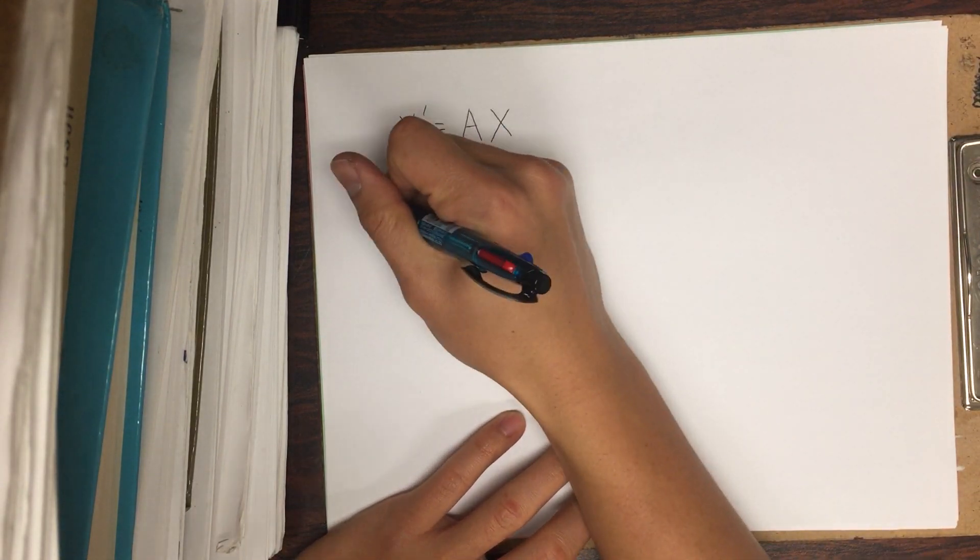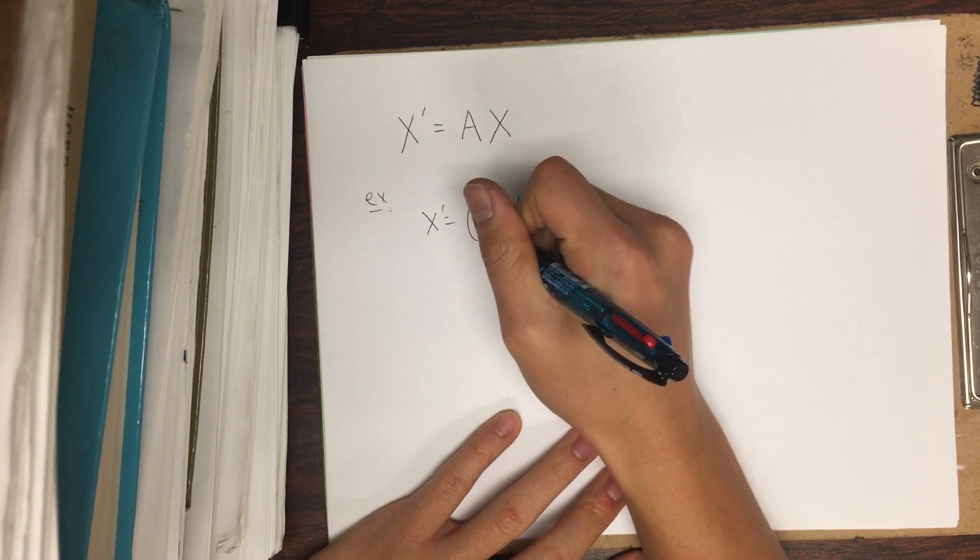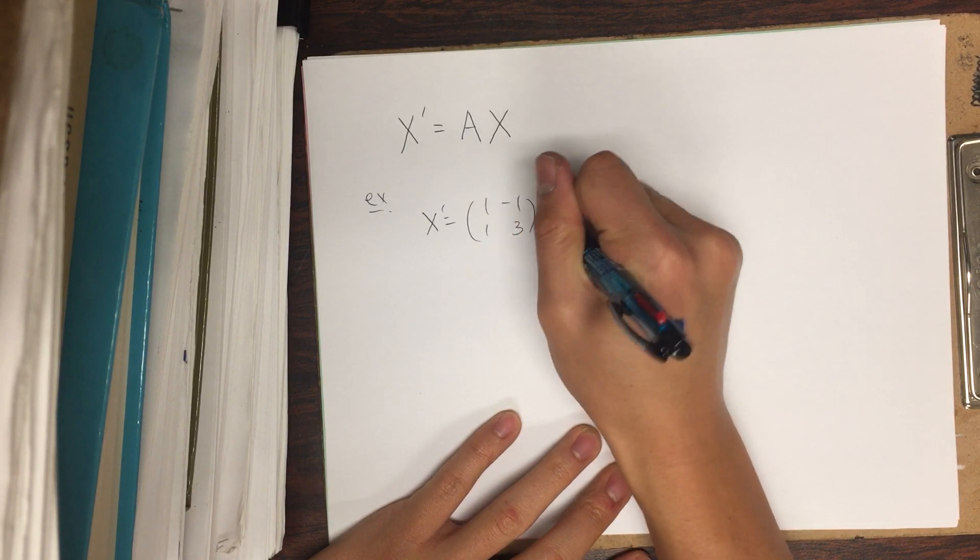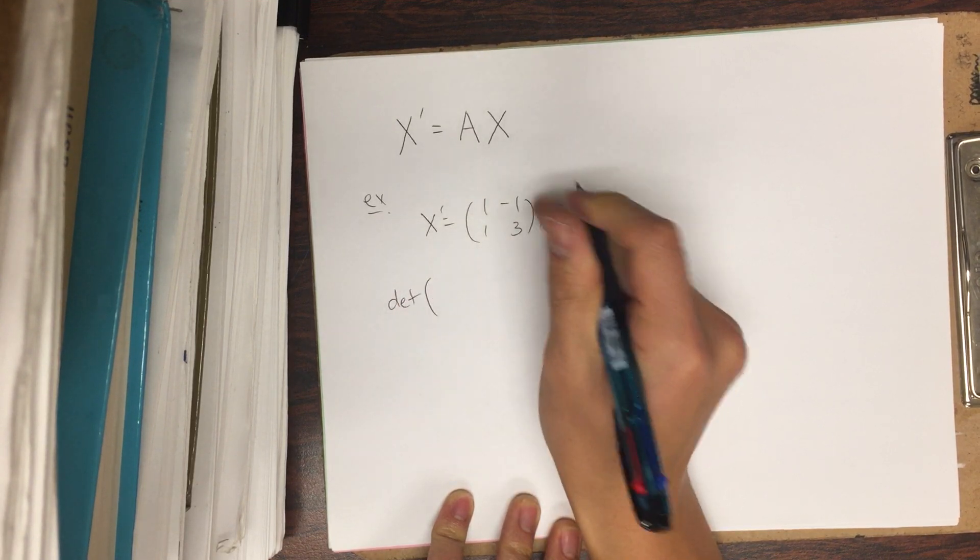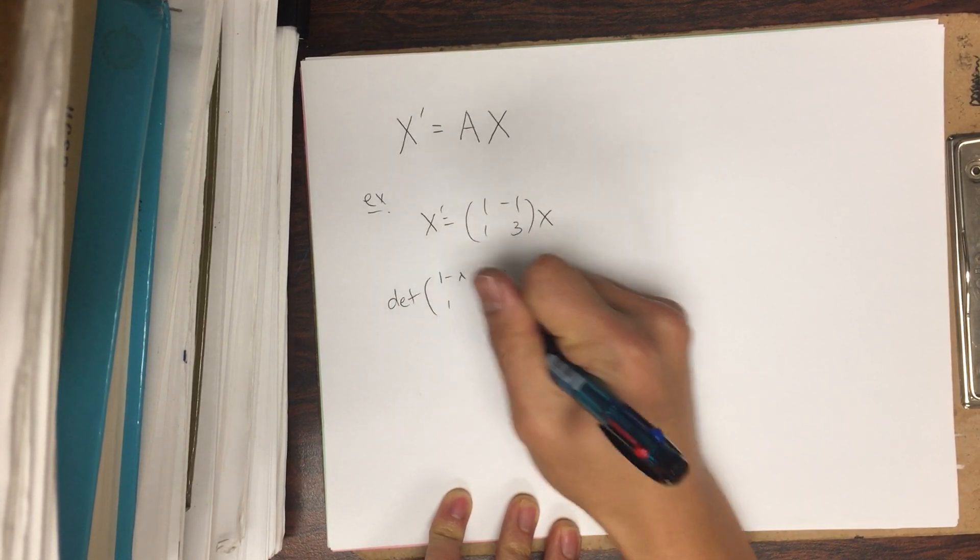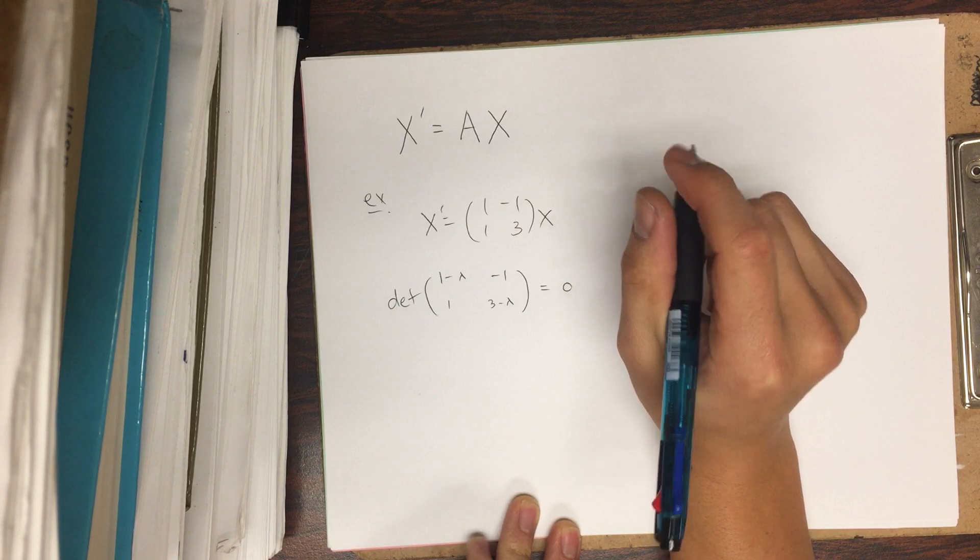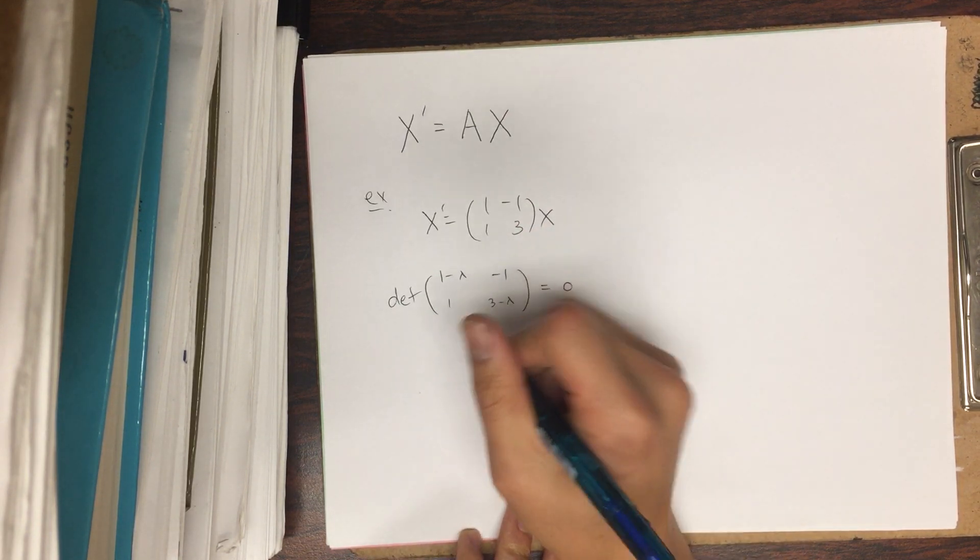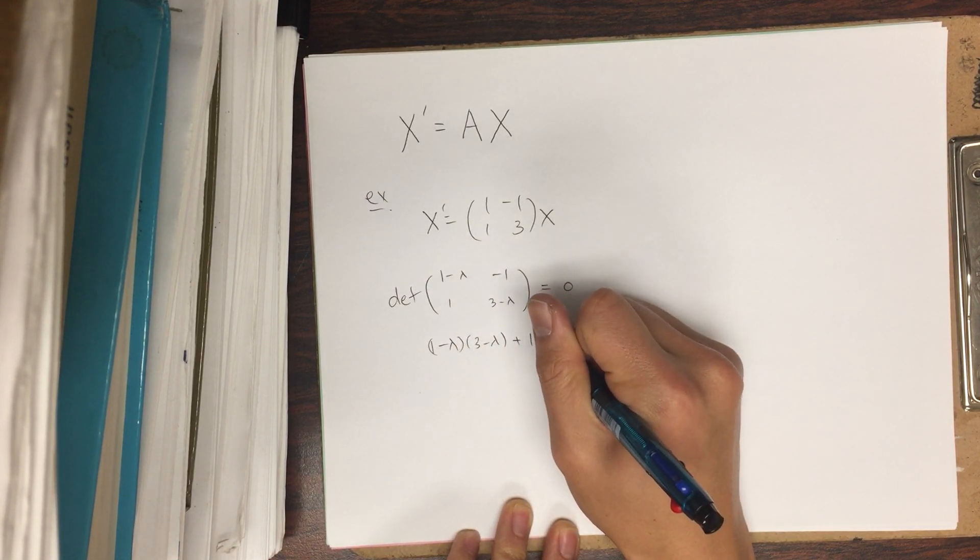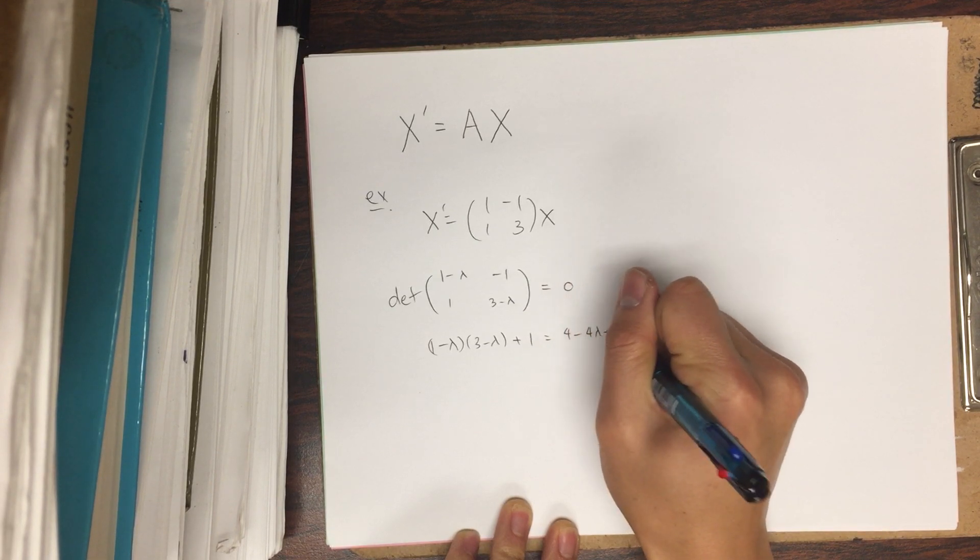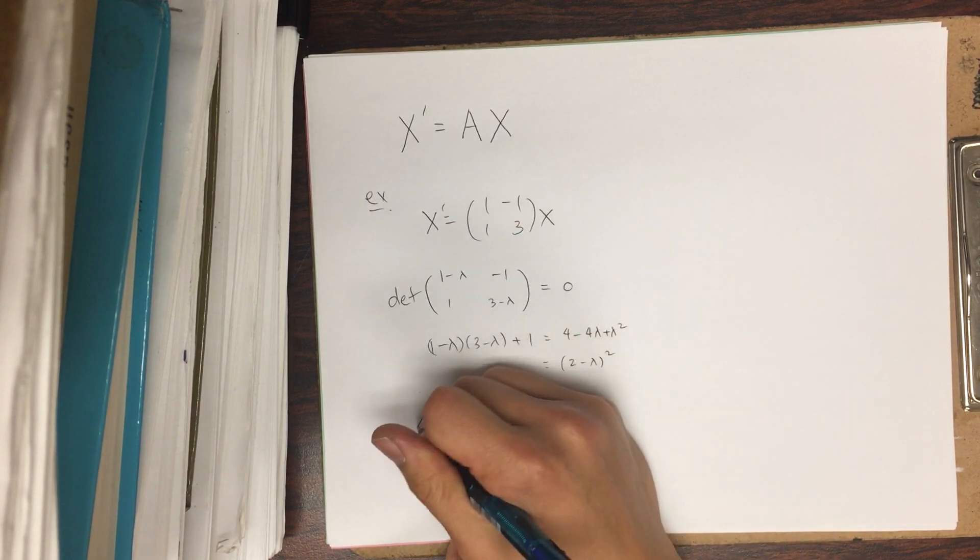So let's start with an example. We have x prime equals [1, -1; 1, 3] times x. Let's first compute the eigenvalues and eigenvectors of this matrix, so to do that you subtract off lambda from the diagonal and compute the characteristic polynomial, which means you take the determinant set equal to 0. So this will be (1 - lambda)(3 - lambda) + 1, which is 4 - 4 lambda + lambda squared, which is (2 - lambda) squared, and so our eigenvalue is 2.